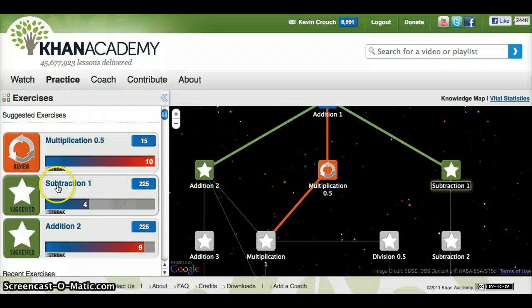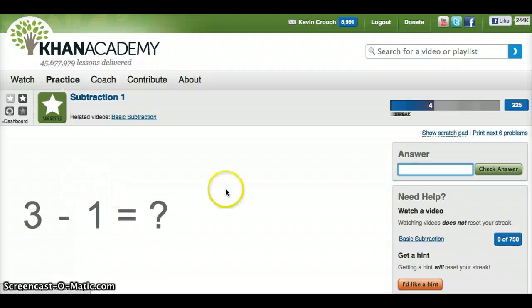To show you what this is like, I'll go into Subtraction 1, which I've started. You can see you have these streaks here. In Subtraction 1, I have a streak of 4 in a row going. It just gives me questions and I'm able to put in the answers. So I'll put in the answer here and then check my answer.